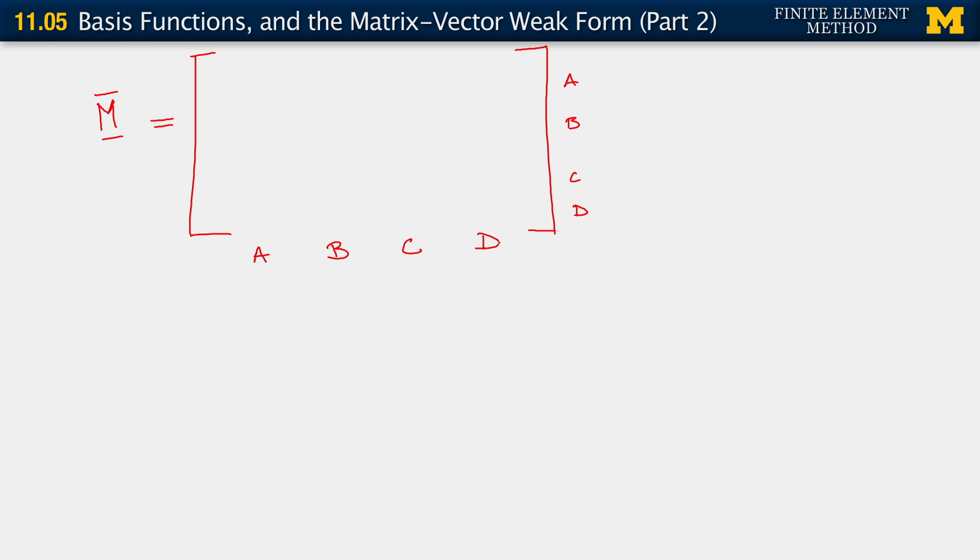So let's look at the contributions to the aa position out here. From ωe1, we would get a contribution which would be me1, 2,2 plus from e2 we get indeed 1,1.